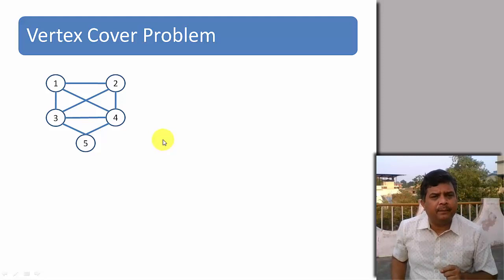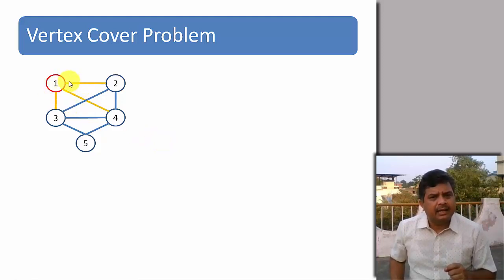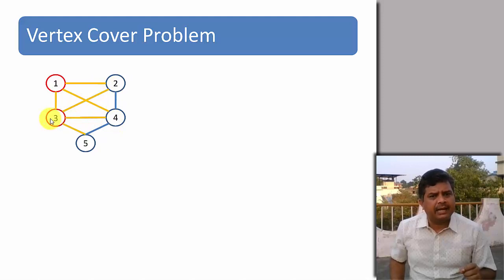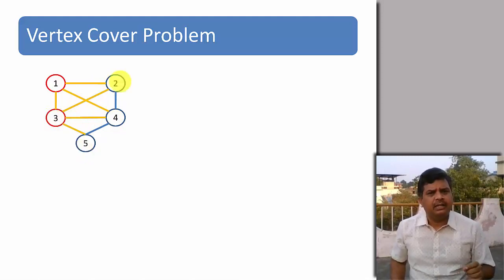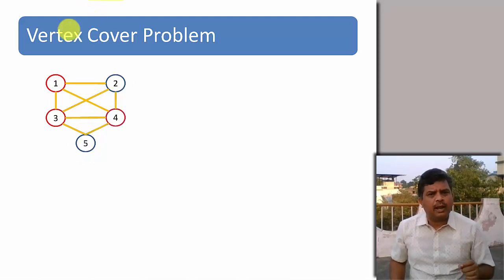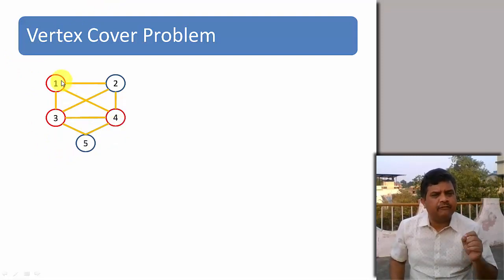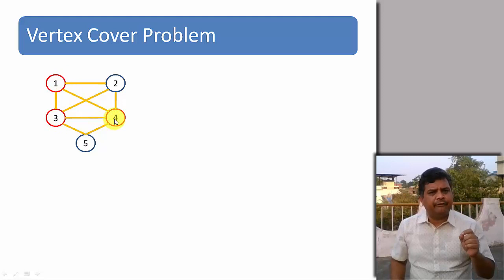Let us see an example. For this particular graph, if I choose vertex 1, then edges H12, H14, and H13 are covered. If I choose vertex 3, then edges H13, H23, H43, and H53 are covered. Similarly, if I take vertex 4, then edges H24 and H54 are covered. It means by choosing vertices 1, 3, and 4, all the edges of this particular graph are covered.